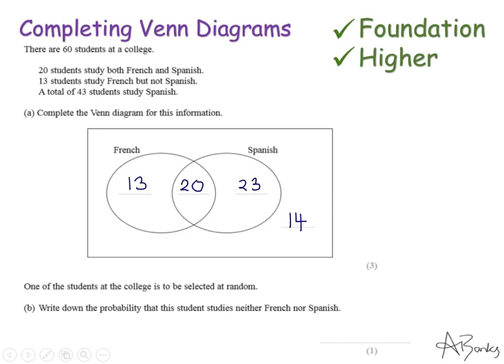The next part of the question says one of the students at the college is to be selected at random. Write down the probability that the student studies neither French nor Spanish. So neither French nor Spanish, it's this here, so I have 14 students. And because it's probability, if it was what fraction of students studying neither French nor Spanish, it would be 14 out of the total. And the total is 60, so that's 14 out of 60. Now they've not told me to simplify, so I'm not going to bother. I'm just going to write 14 out of 60.